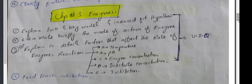Chapter 3, Enzymes. Explain lock and key model and induced fit hypothesis. Write briefly the mode of action of enzyme. Explain in detail factors that affect the role of enzyme: enzyme reaction, temperature, pH, enzyme concentration, substrate concentration.